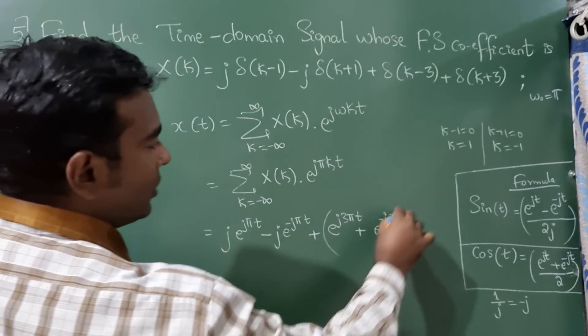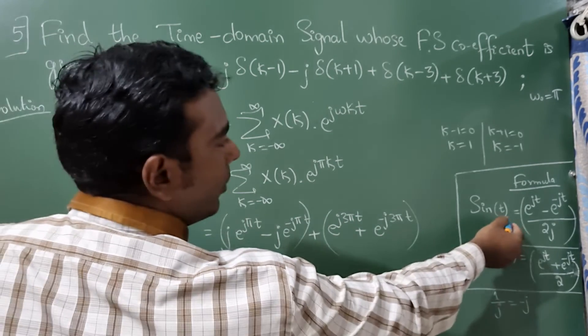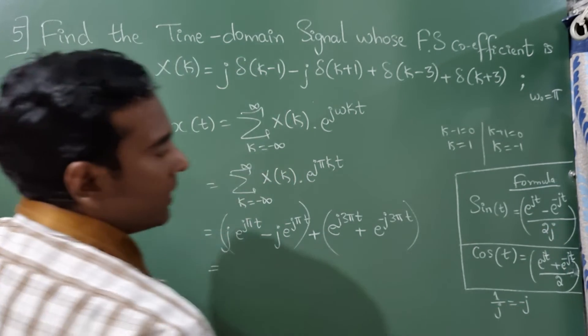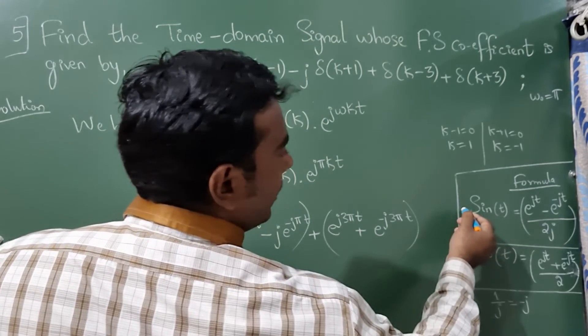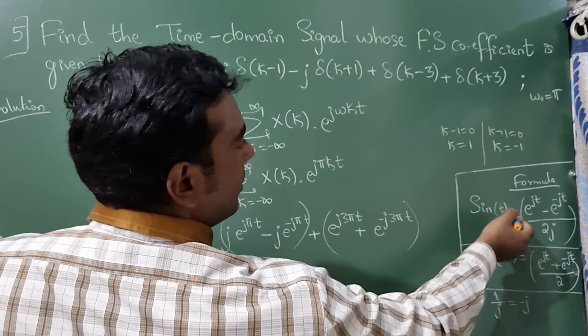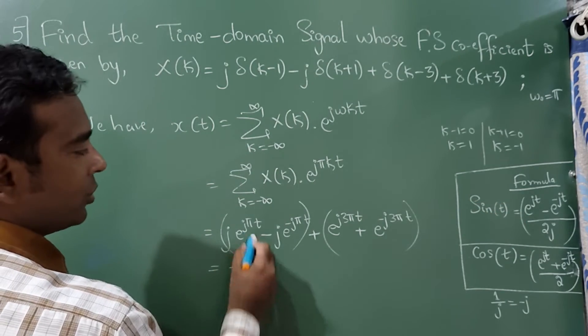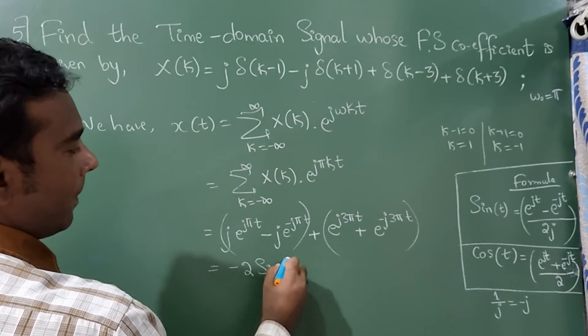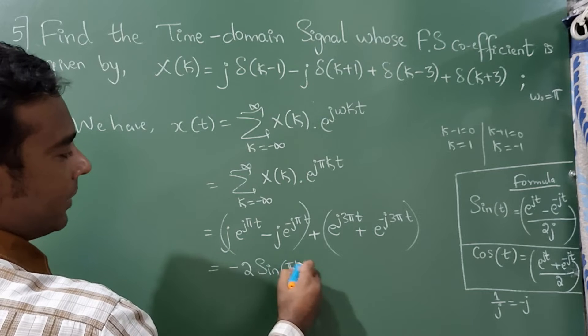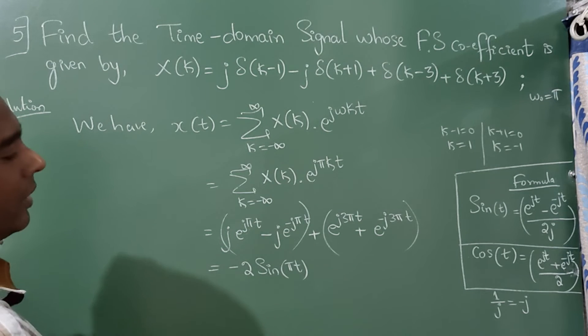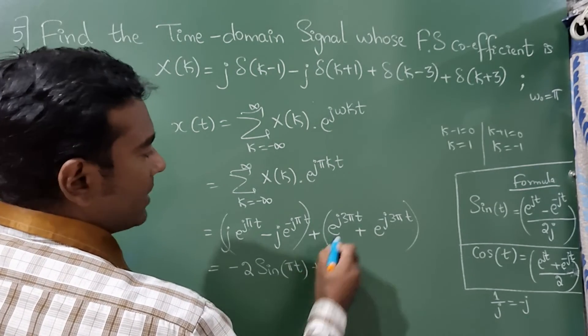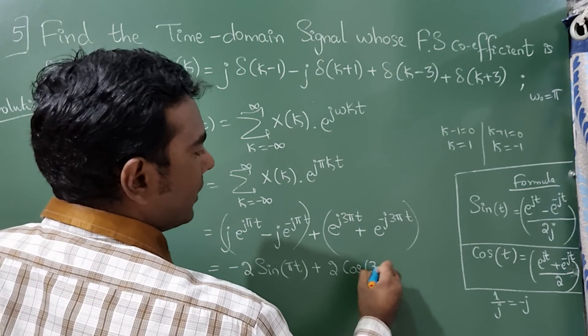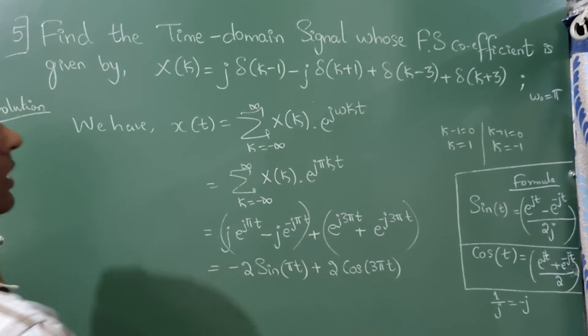Now here, these two and these two, we have a formula here. 1 upon j is considered as minus j. Take this 2 on the other side and take minus. So you will get minus 2 and this you can write it as sine pi t because the omega value is pi here, plus this is nothing but 2 cos 3 pi t. So this completes your answer.